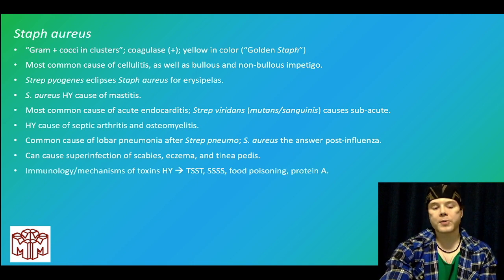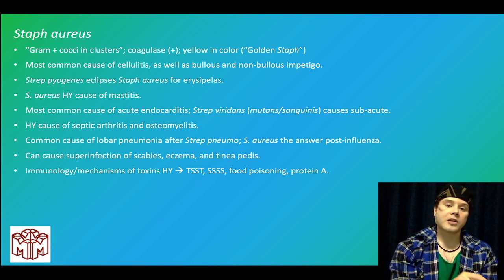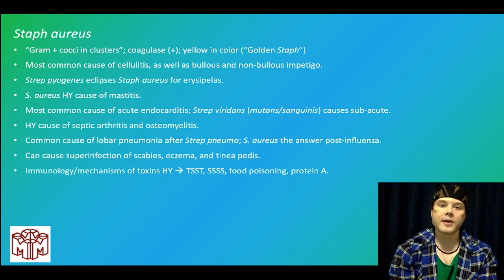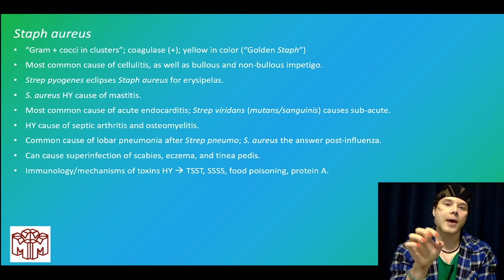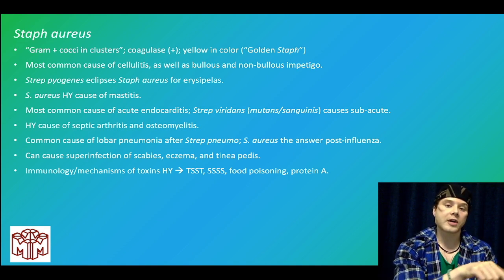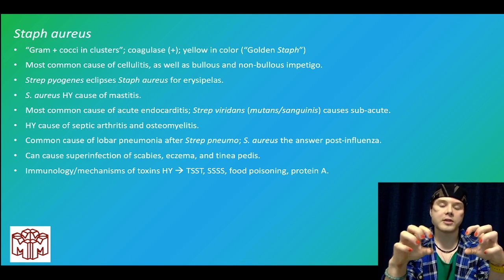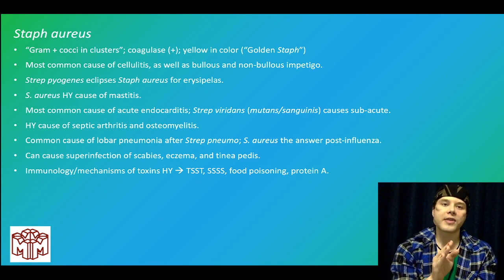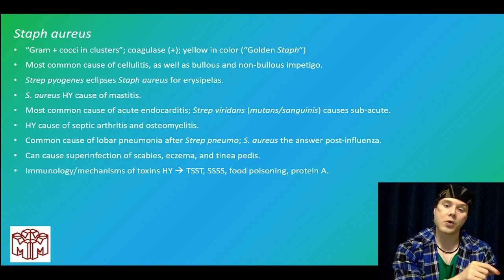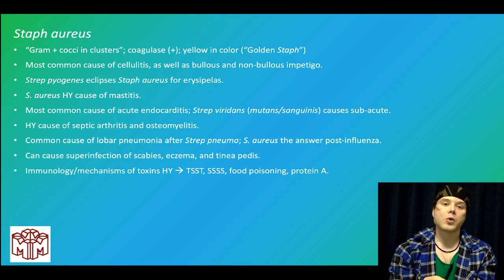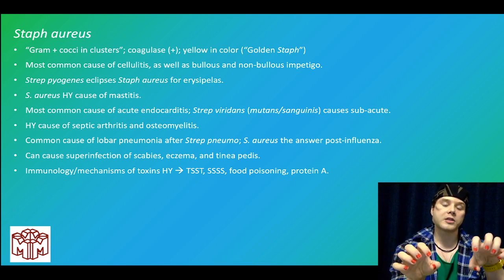Immunology for staph aureus is super high yield. Toxic shock syndrome comes from cotton packing or tampons. If they describe nasal cotton packing and a blood pressure of 80/60, the immunologic receptors most likely bound are MHC2 and T cell receptor. TSST toxin from staph aureus is a superantigen exotoxin — it bridges MHC2 and T cell receptor, causing the macrophage to release cytokines. Don't confuse this with endotoxic shock from gram-negatives, where endotoxin binds CD14 (toll-like receptor 4) on macrophages.